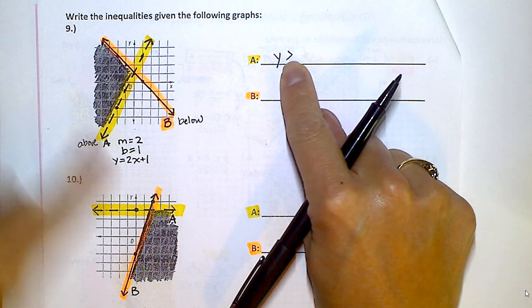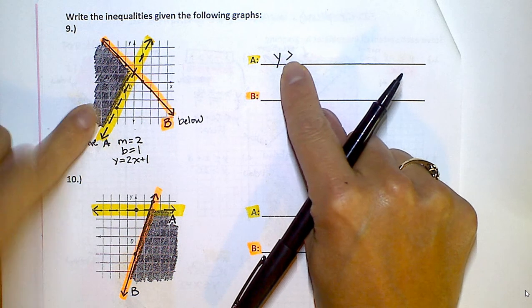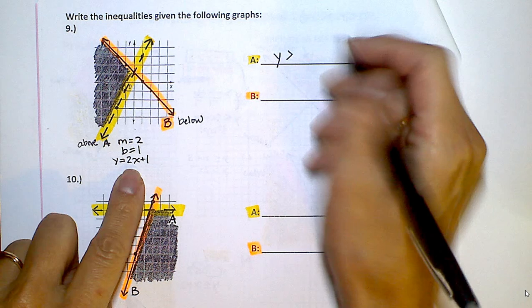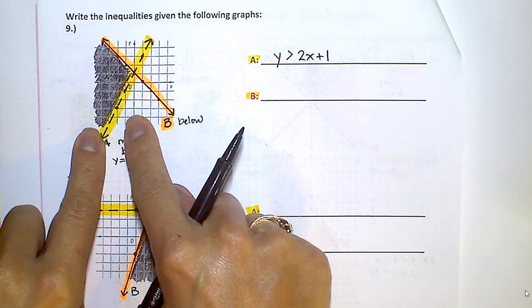Okay, so we shaded above and it's a dashed line so don't put an equal to sign. So y is greater than 2x plus 1. So now I give you the picture, you have to give me the inequality.